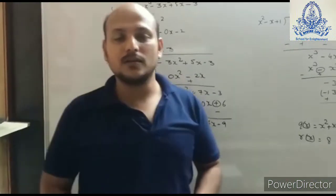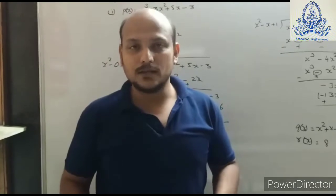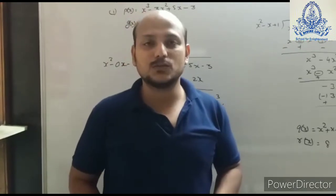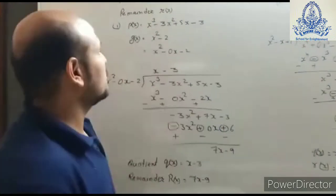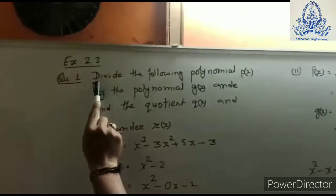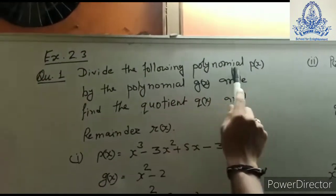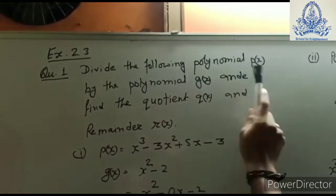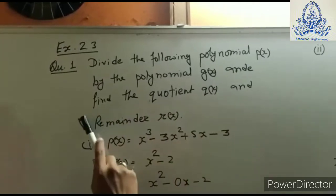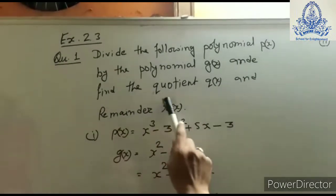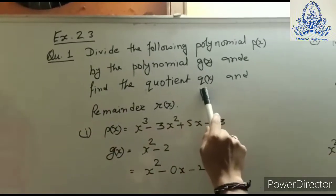Hello friends, today we are going to learn a new exercise, that is Exercise 2.3. Question number one says: divide the following polynomial p(x) by the polynomial g(x) and find the quotient q(x) and remainder r(x).